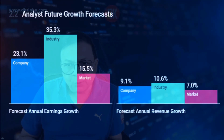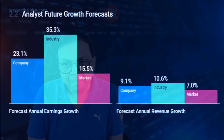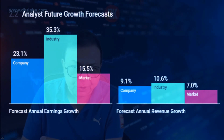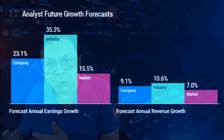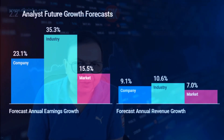Whenever we select a stock for long-term investing or a positional view, the future growth forecast becomes a very important consideration. This company is likely to post annual earnings growth of 23.1%, which is lower than the industry's growth of 35.3%, while the broader US stock market is likely to grow at 15.5%. The annual revenue growth forecast stands at 9.1%, lower than the industry but higher than the broader US stock market. Overall, the annual growth forecast in earnings and revenues looks okay.